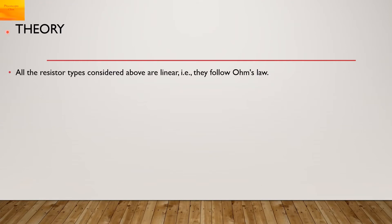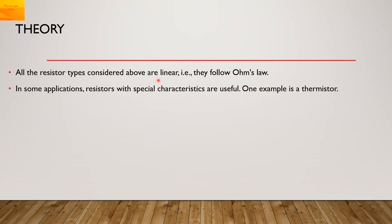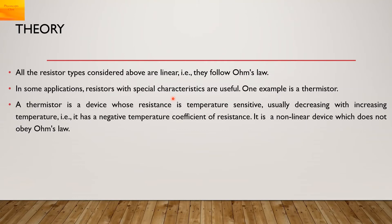All these resistors obey Ohm's law, hence they are considered linear. But there are certain resistors which we call thermistors, which have very special characteristics. A thermistor is a device whose resistance is temperature sensitive, usually decreasing with increasing temperature — that is, it has a negative temperature coefficient of resistance. It is a non-linear device which does not obey Ohm's law.